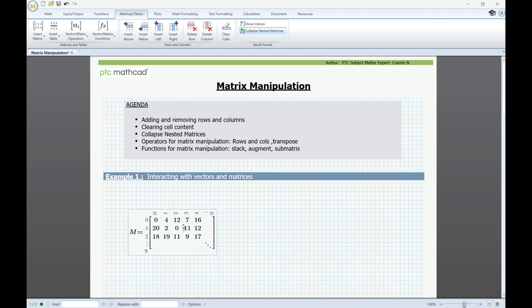If the collapsed matrix is selected, the row and column indices are visible. If you want to see them even when the region is not selected, you have the option to show indices, and when you click outside, you can still have the indices shown on the sides.